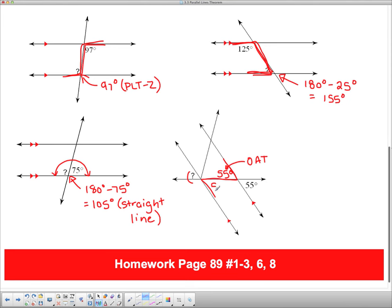This angle in here is 55 degrees because it's opposite. So that's because of OAT. Now because of the Z pattern, this is 55 degrees in here. So that's 55 degrees because of the PLT Z pattern.